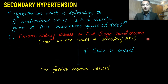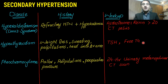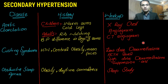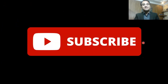In summary, secondary hypertension is hypertension not controlled by three medications, including a diuretic at maximum doses. The most common cause is chronic kidney disease. Other causes include hyperaldosteronism, hyperthyroidism, pheochromocytoma, aortic coarctation, Cushing syndrome, obstructive sleep apnea, and renovascular hypertension. Please click the subscribe button and check out the other videos on step-by-step treatment of hypertension. Thank you very much.